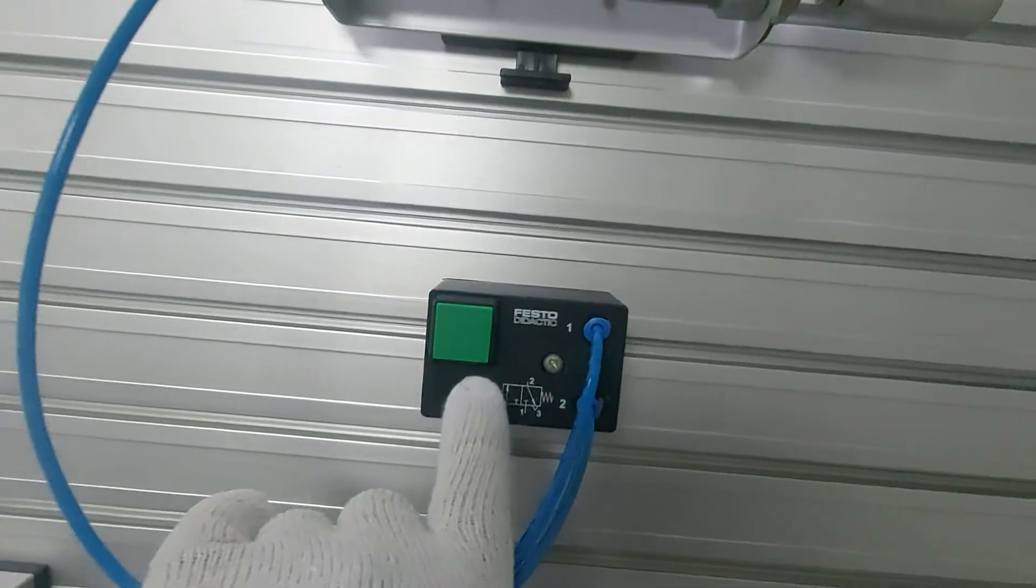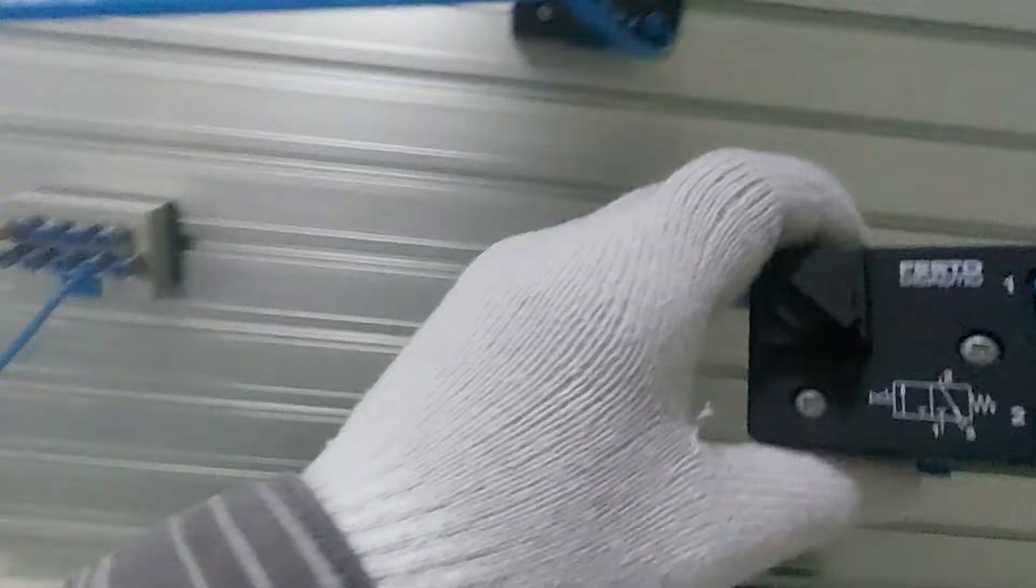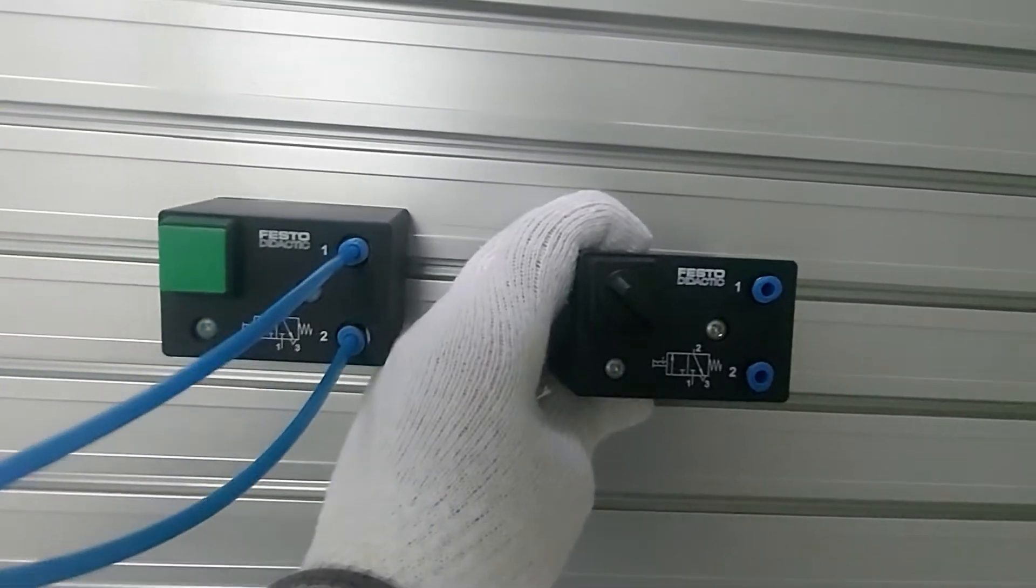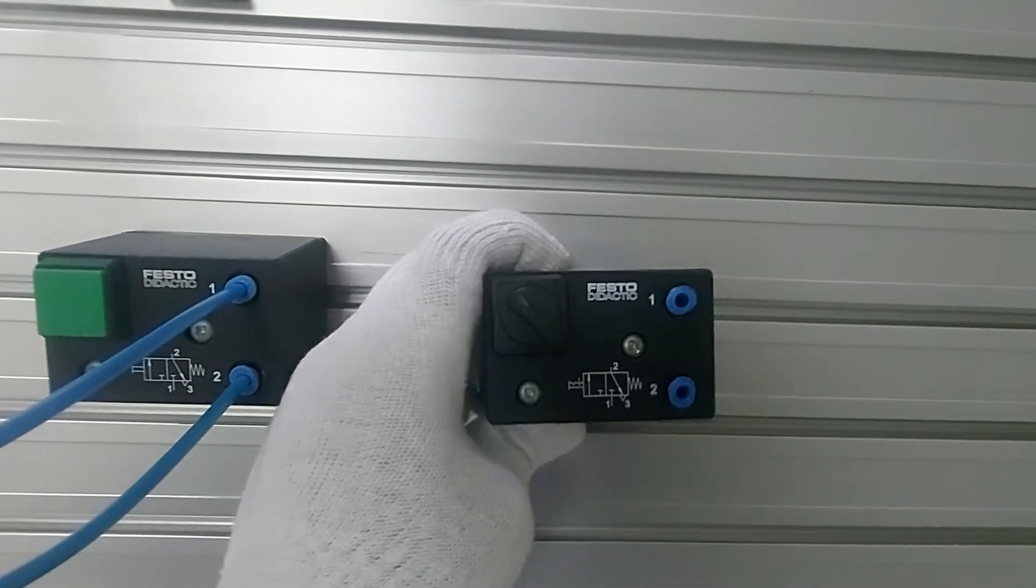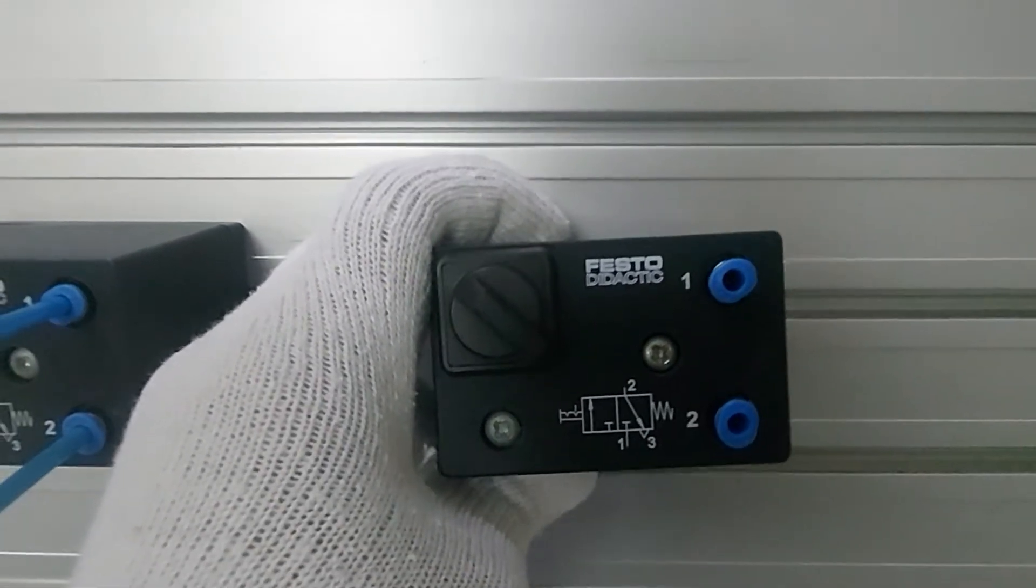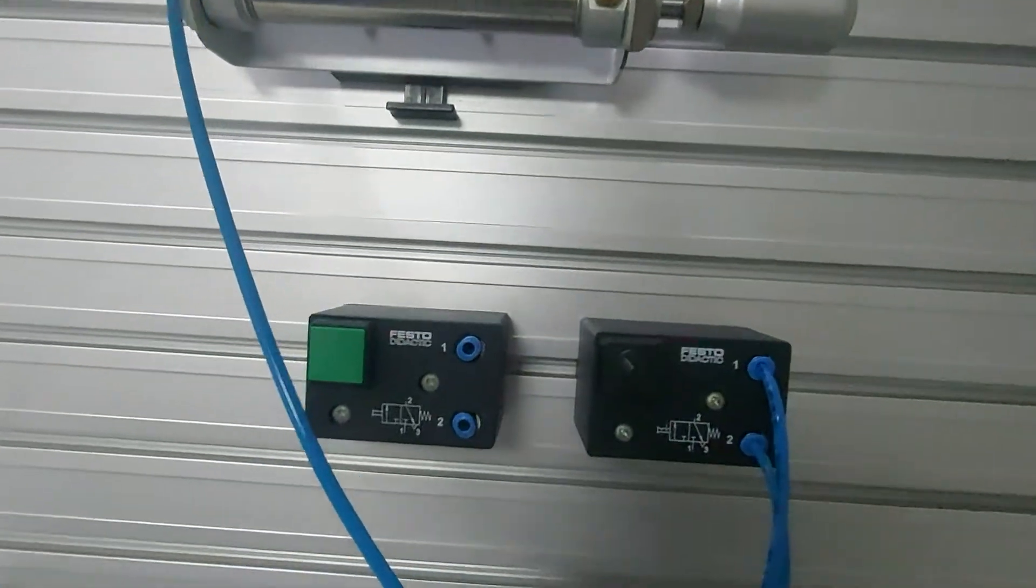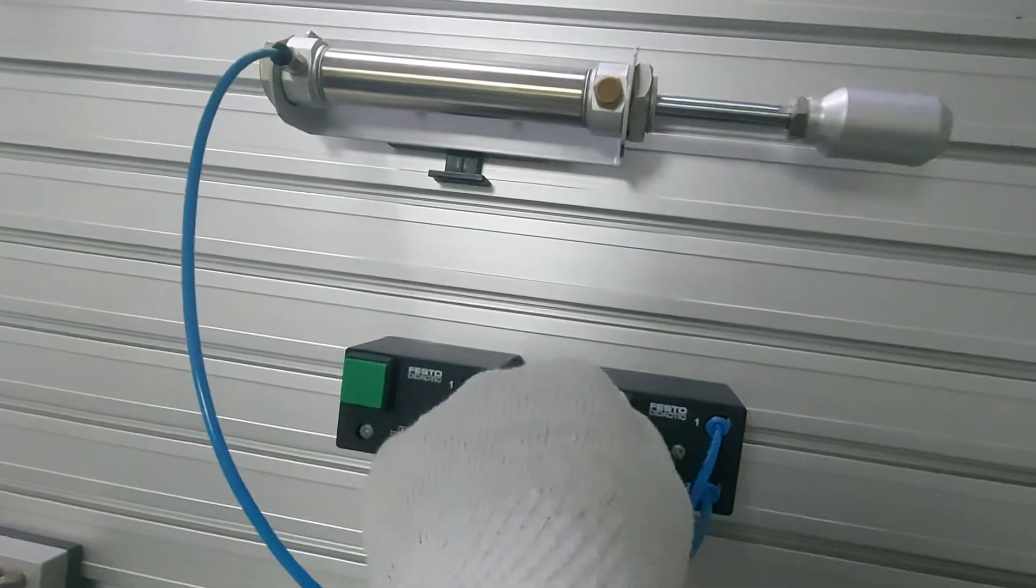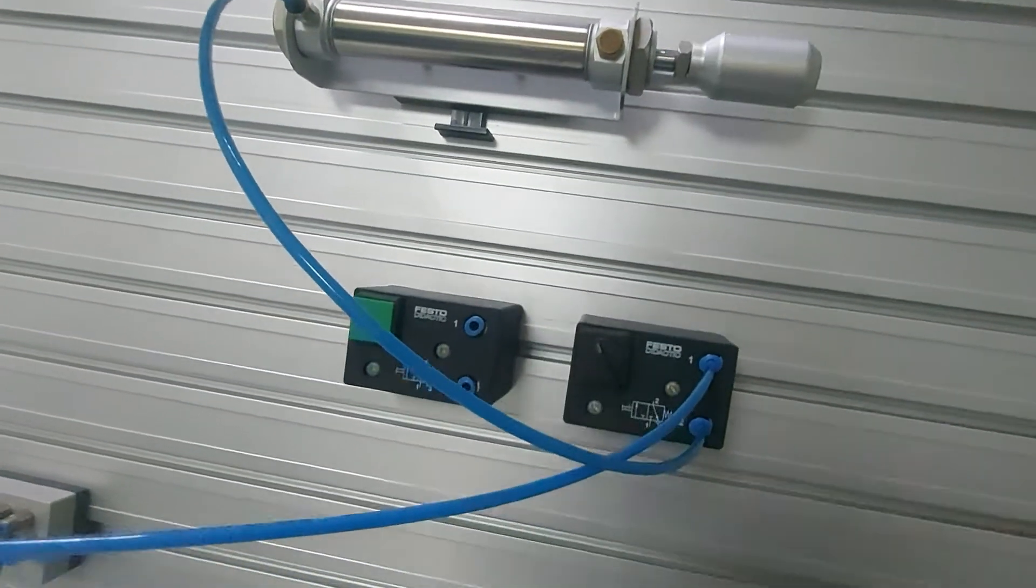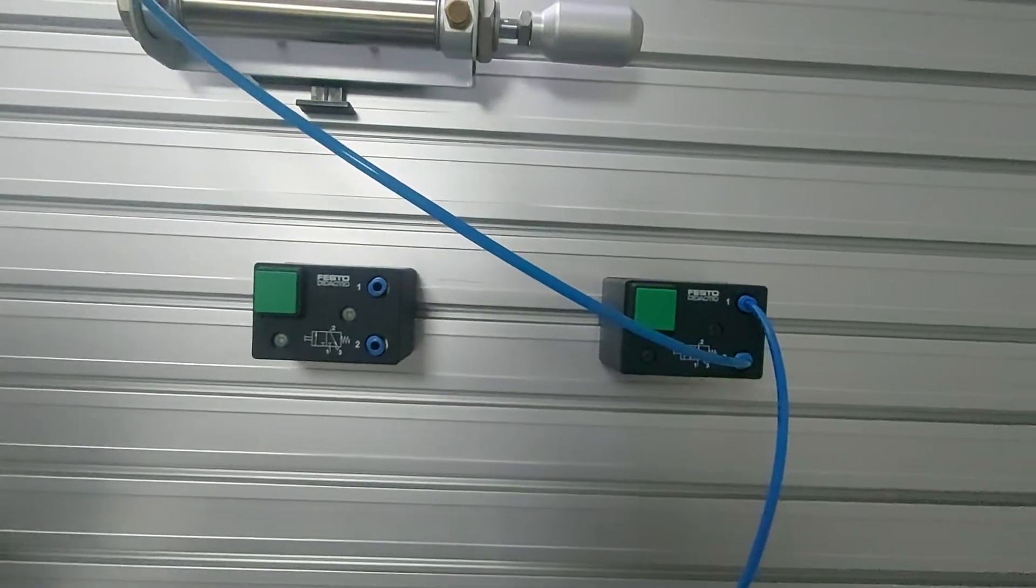Here we used push button DCV, 3 by 2 DCV with push button. Now we'll change it with another direction control valve. Both of them are the same, but the operator is different. Here we have selector switch, so 3 by 2 direction control valve with selector switch. The operator changed but the function will be the same, based on the purpose or application you will change the valves.